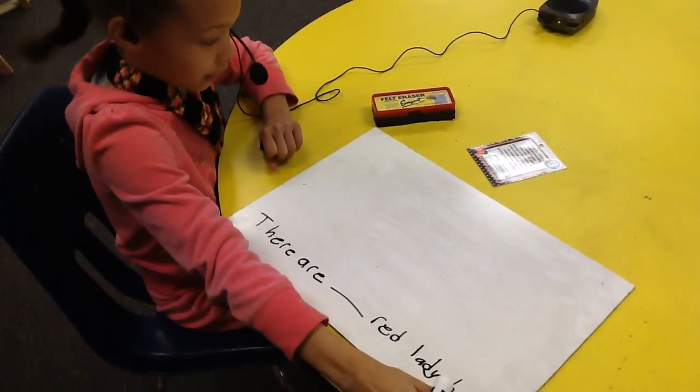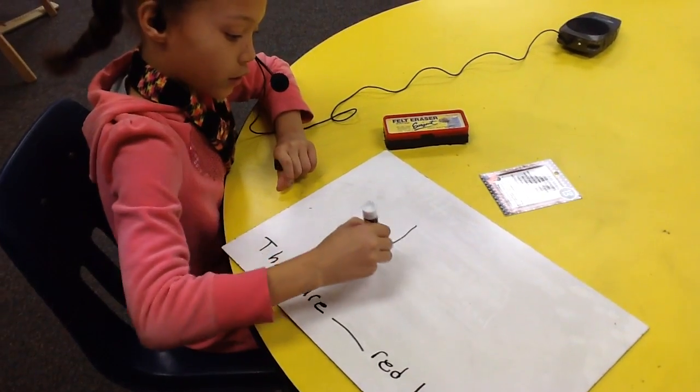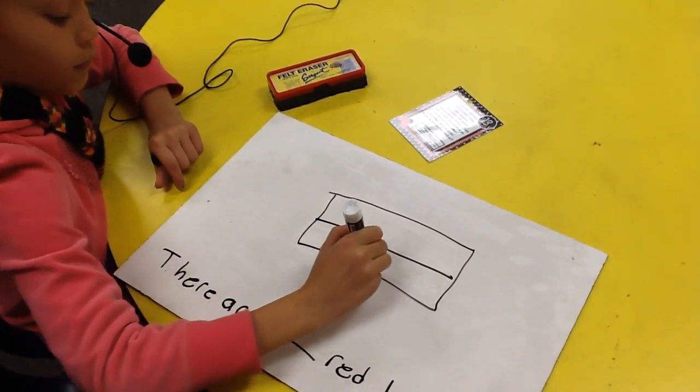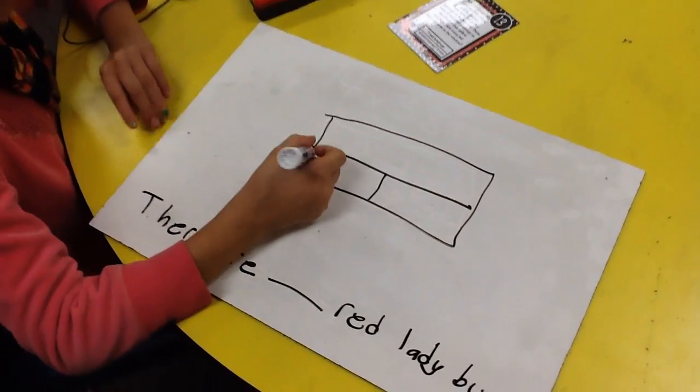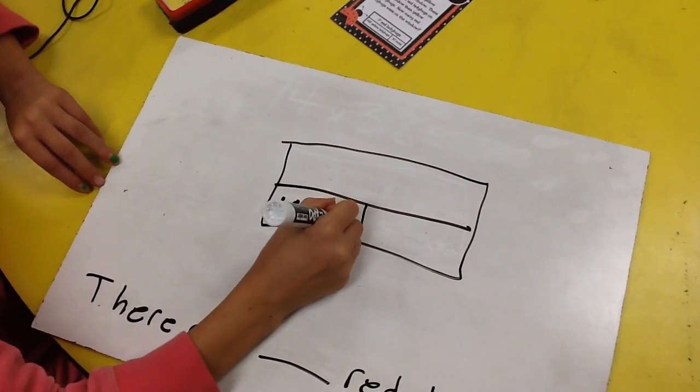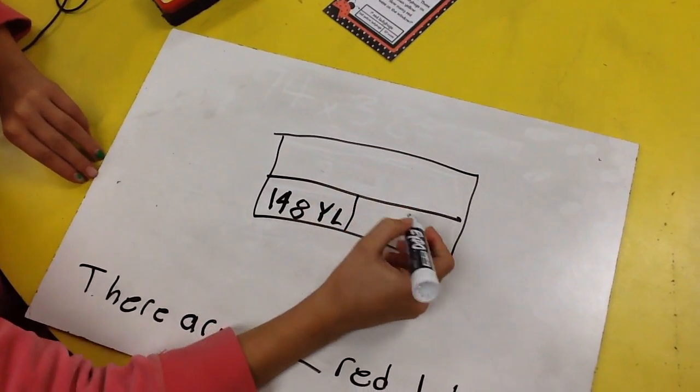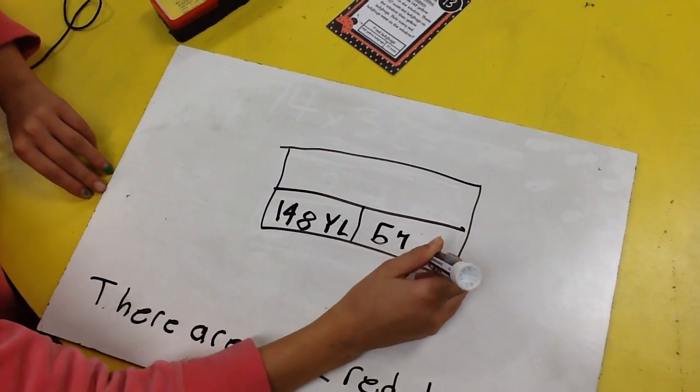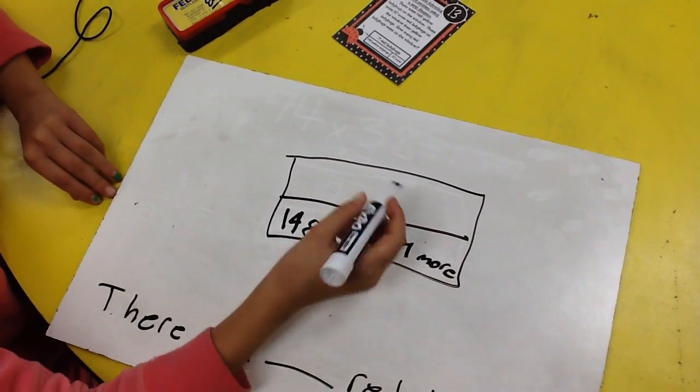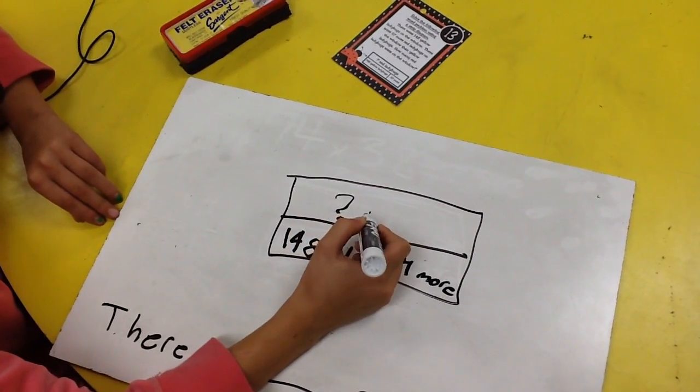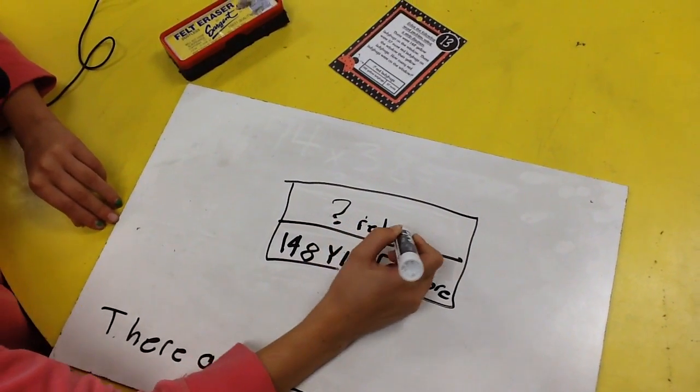So we're going to have to make a strip diagram. On the first box we're going to write 148 and YL for yellow ladybugs. And on the other side we're going to write 57 more. And on the top we're going to write blank red ladybugs.